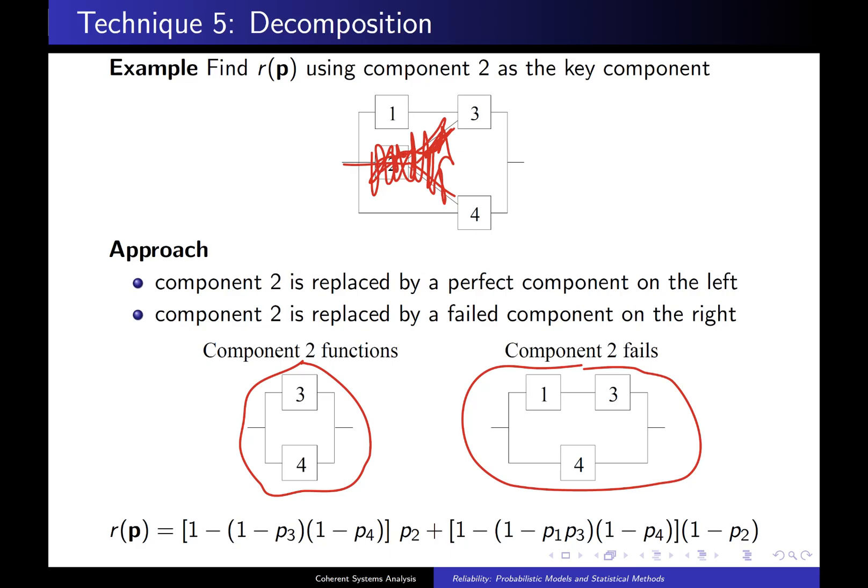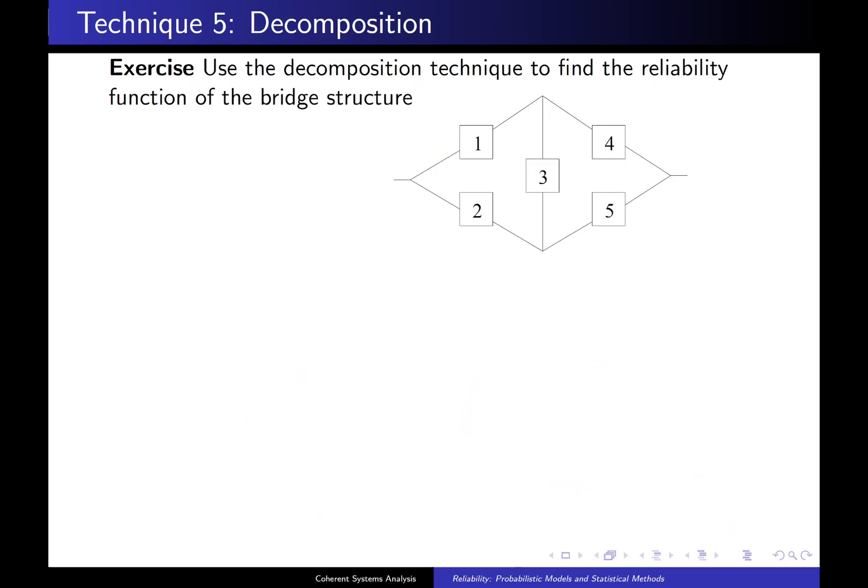Finally, the last step in decomposition to get your reliability function, you write down the reliability function of this particular system, multiplied by P2. Remember, 2 is the key component, so that's why you put a P2 there. And then you multiply that by the reliability of this system, and then you multiply by 1 minus P2. If you'd like to multiply that out, it might simplify a little bit.